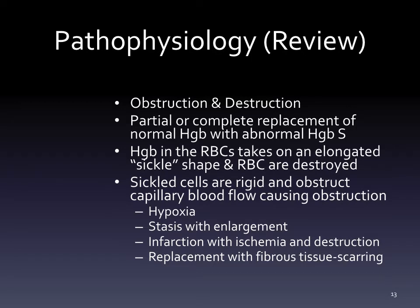In sickle cell anemia, there is partial or complete replacement of normal hemoglobin with abnormal hemoglobin S. When normal hemoglobin is replaced with hemoglobin S, the red blood cell takes on a sickle shape and doesn't function properly. These rigid, sickled cells get caught in the microvasculature, obstructing capillary blood flow. This leads to hypoxia, stasis of blood, vessel enlargement, infarction with ischemia, destruction, and replacement with fibrous scar tissue.